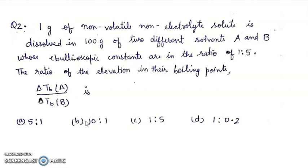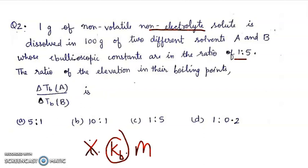So, delta Tb is the formula of I into Kb into m. Because this is non-electrolytic, i will not be a term. Kb's ratio is 1 is to 5, and the molality is the same because 1 gram solute is in 100 gram solvent.